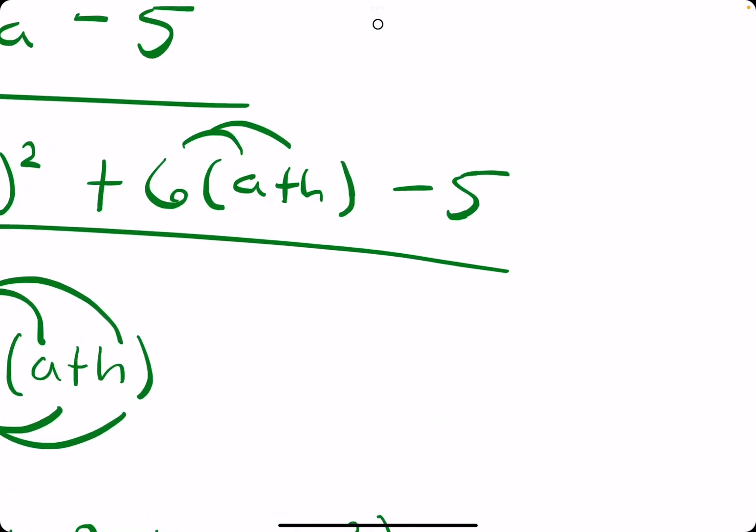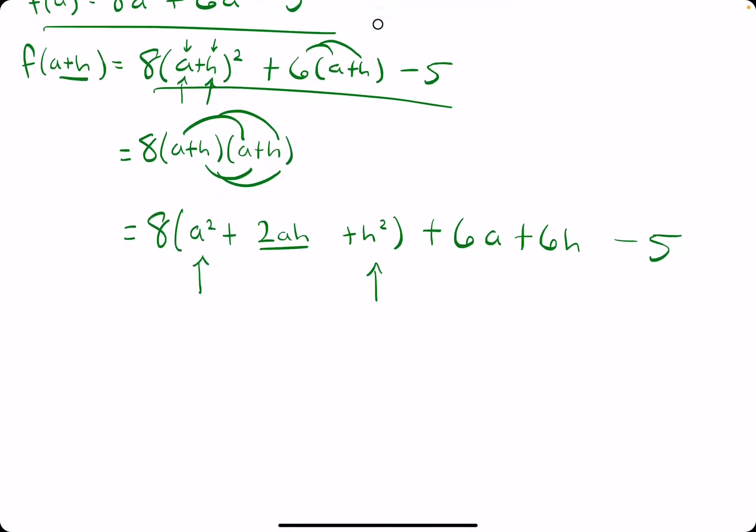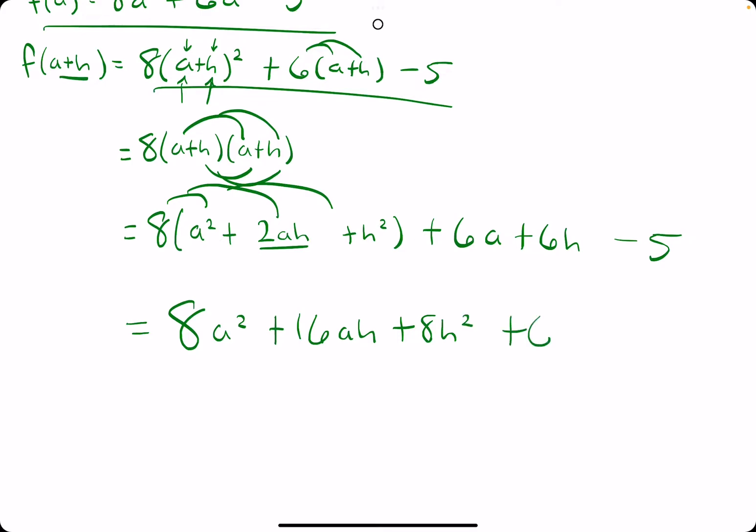We want to distribute the six to the a and the h. So, six a plus six h, and then minus five. So, the last thing left to do with this is distribute the eight. So, 8a² plus 16ah plus 8h² plus 6a plus 6h minus 5.